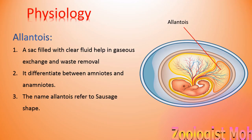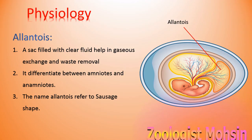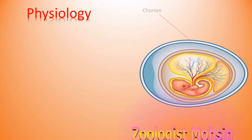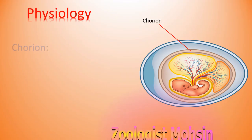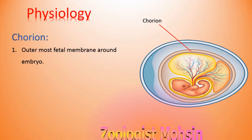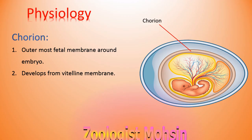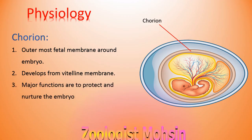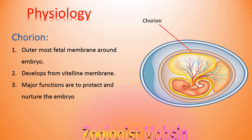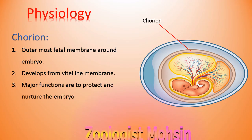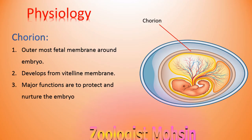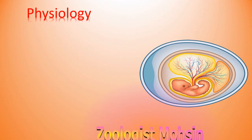The next layer is the chorion — also a very important layer. The chorion is the outermost fetal membrane around the embryo and develops from the vitelline membrane. Its major functions are to protect and nurture the embryo.